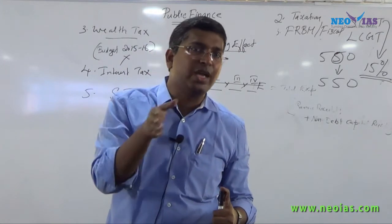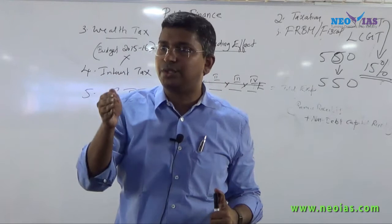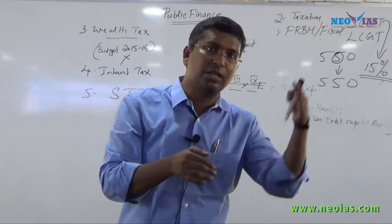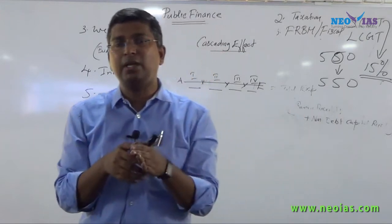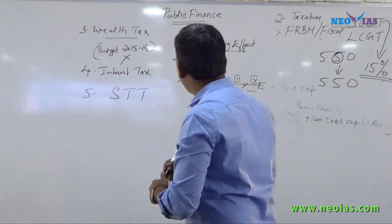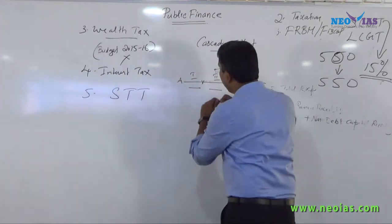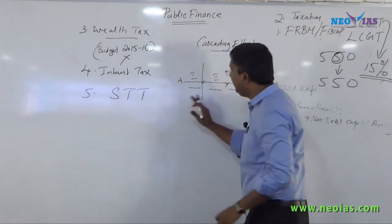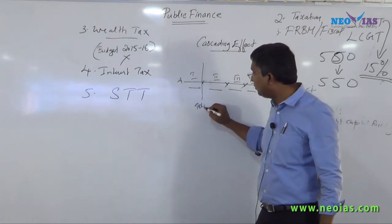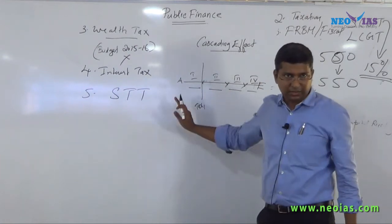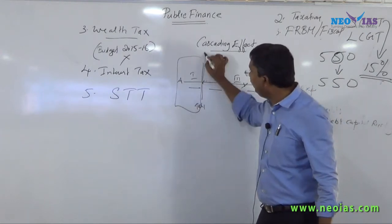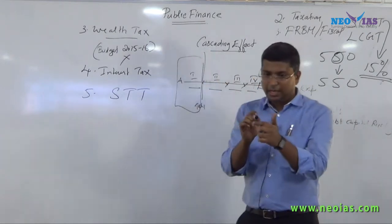From wheat, value addition is happening — something has been added at each stage. What happened earlier is: from stage to stage, during stage 1, there will be a tax — Tax 1. The government will impose a tax at the first stage. So the cost at this stage includes a tax.